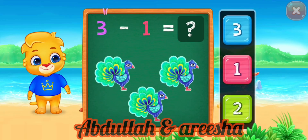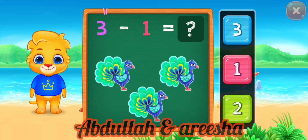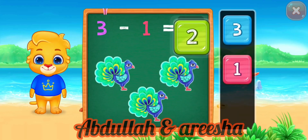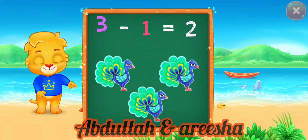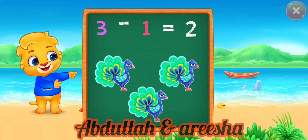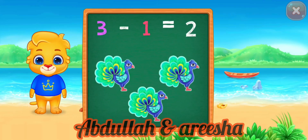3 minus 1 is equal 2. 2! Woohoo! 3 minus 1 is equal 2.